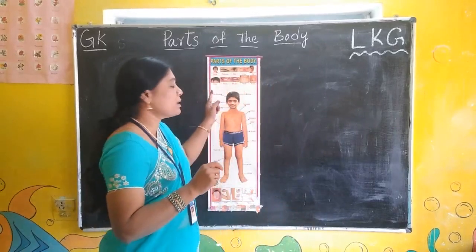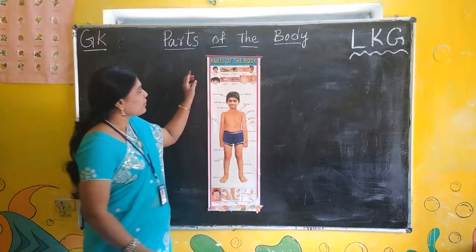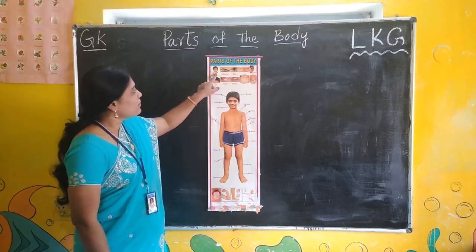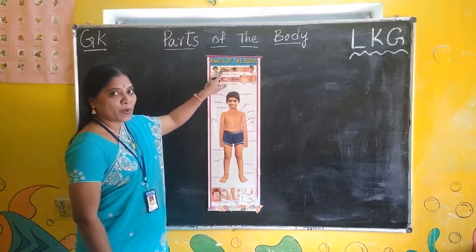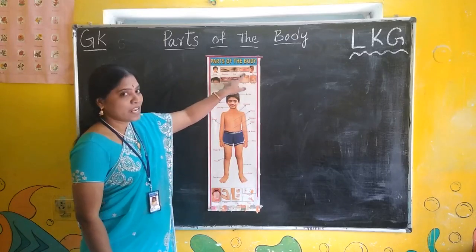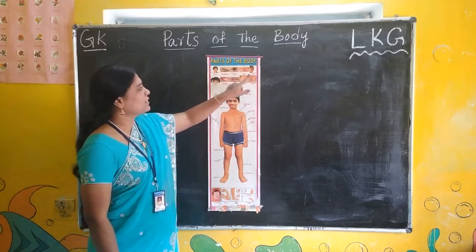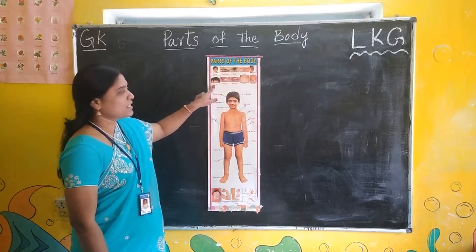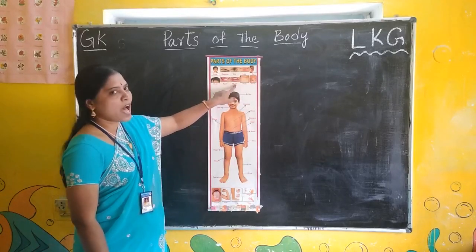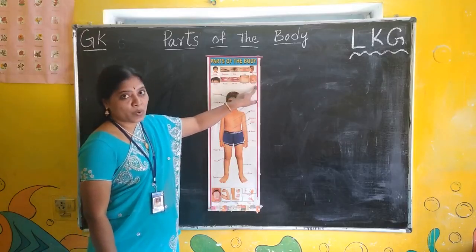Here I have one picture. Look at the board. This is the face. These are eyebrows, eye, lips, ear, head, teeth, mouth, neck, nose.